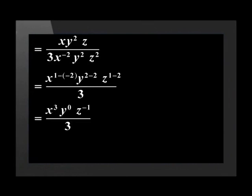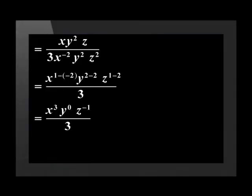We simplify to get x to the power of 3, times y to the power of 0, times z to the power of negative 1, all over 3. But we are not done yet, because the question asked us to write the answer with positive exponents. Therefore x cubed stays the same, y to the power of 0 equals 1, and we move z to the power of negative 1 to the denominator so it becomes z to the power of positive 1. The final answer is x cubed over 3z. Now let's cross back to George.